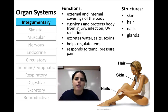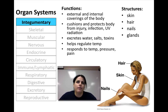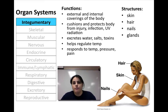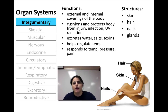The integumentary system is pretty much the external and internal coverings of the body — mainly epithelial tissue. It cushions and protects the body from infections, injuries, and harmful UV radiation. It also acts as part of the excretory system, releasing excess toxins or waste. It helps regulate temperature through sweat glands, and it responds to sensory stimuli like pressure, temperature, or pain. The main structures are the skin, hair, nails, and glands.